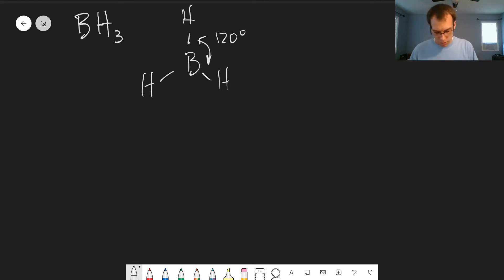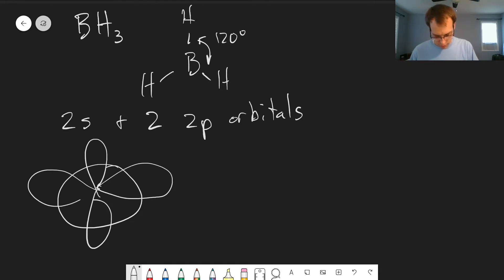And so now what we're going to do is combine the 2s and two of our 2p orbitals. So if we take our s orbital like this, and then our p orbital this direction and this direction, we're going to add all these together.